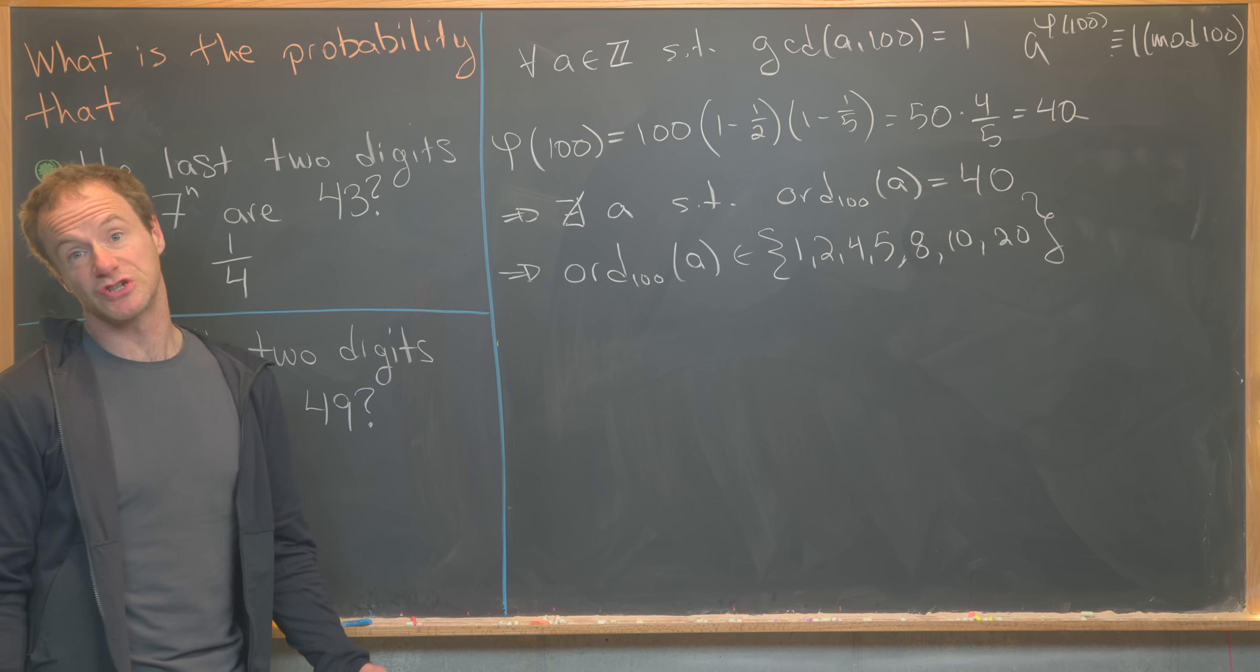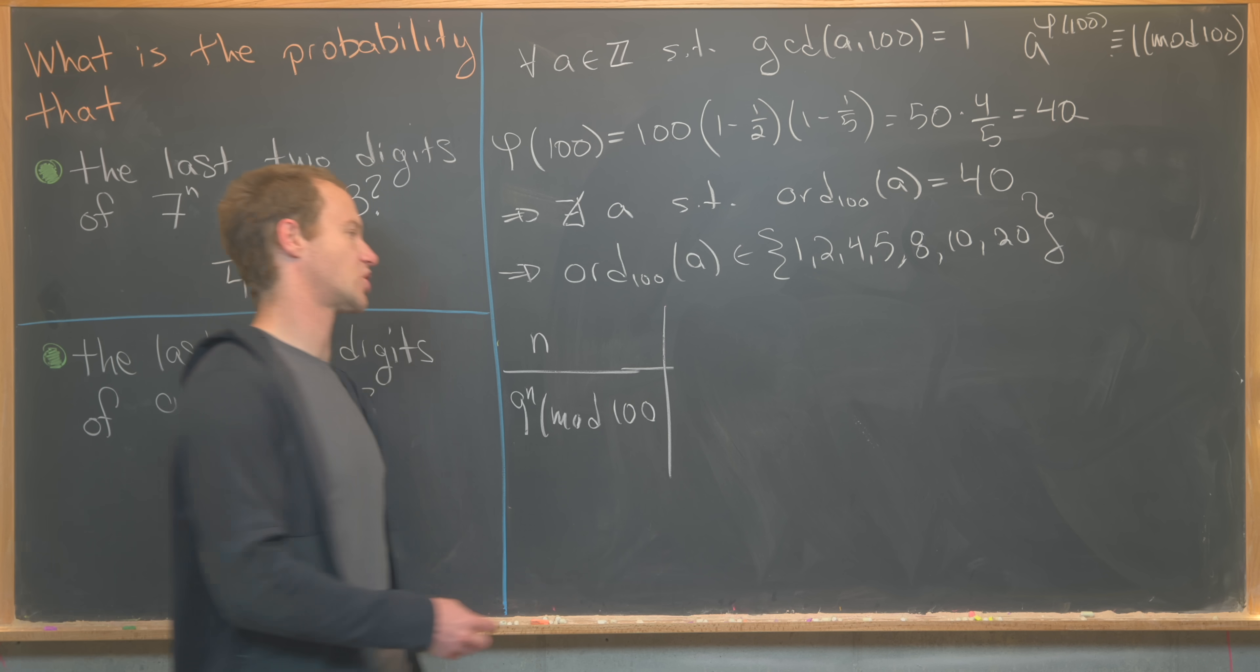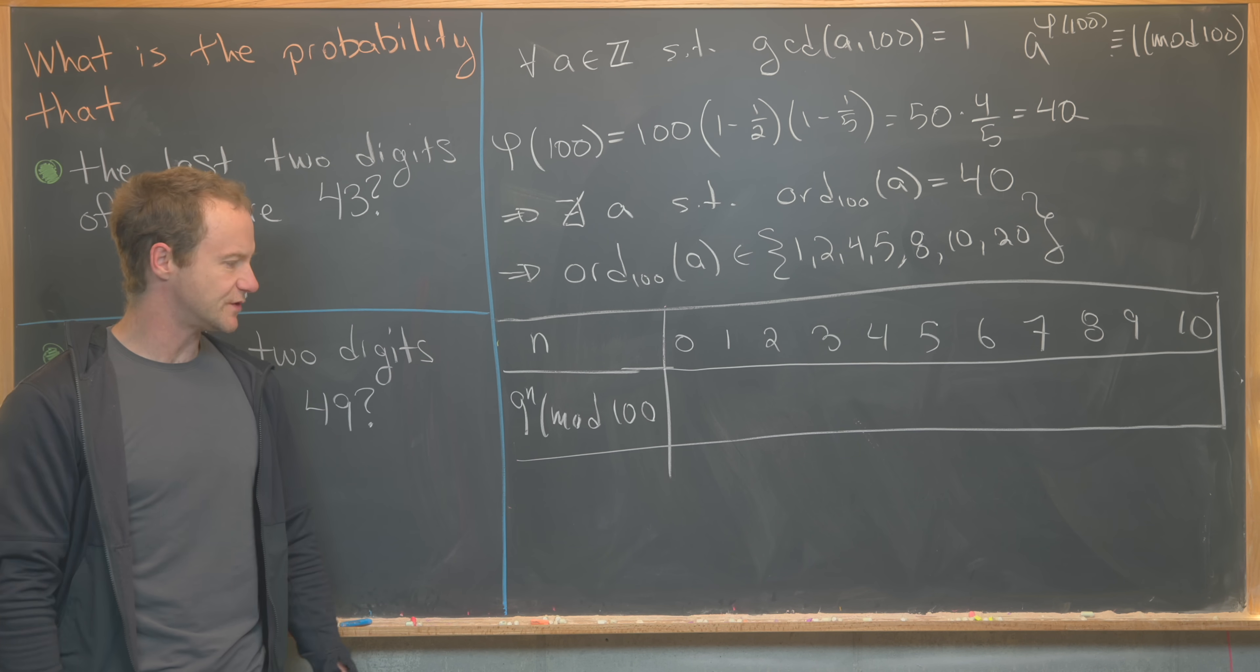Now we just need to figure out what is the order of 9 mod 100. And we'll do that by, again, just making a chart. So our chart will be n, and then 9 to the n mod 100. So let's get this chart built. So I'll let you guys do the calculation on your own, and I'll just fill in all of the values here, and then we'll go over these values.